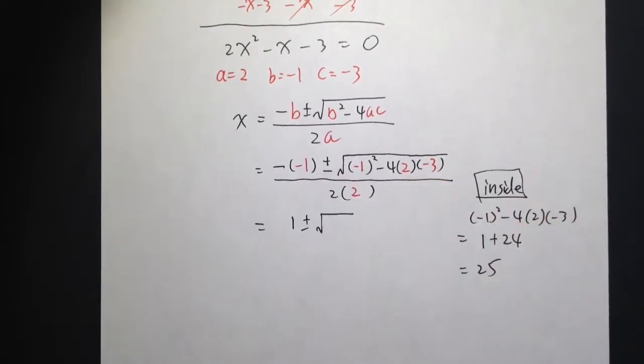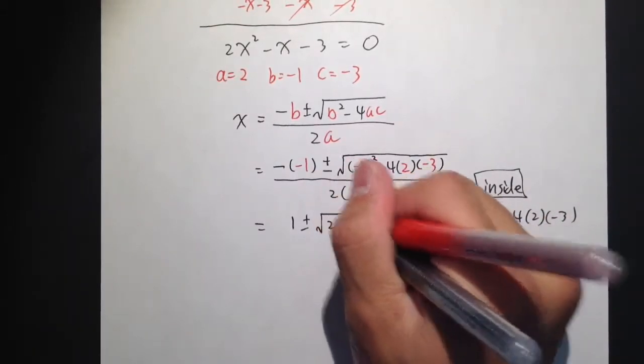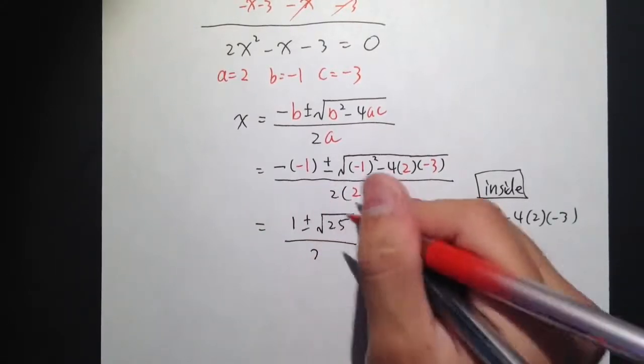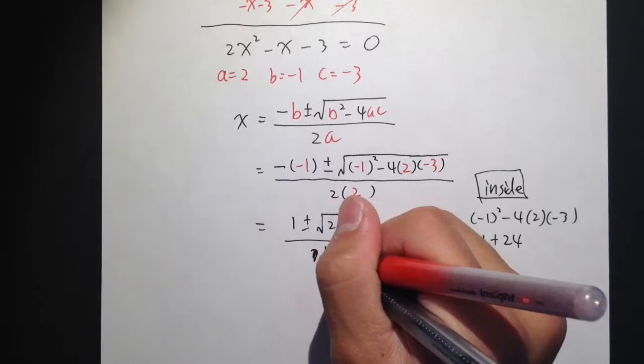This number will go inside of the square root. So both of these over 4, because 2 times 3 is 4. So let me just write it as 4.